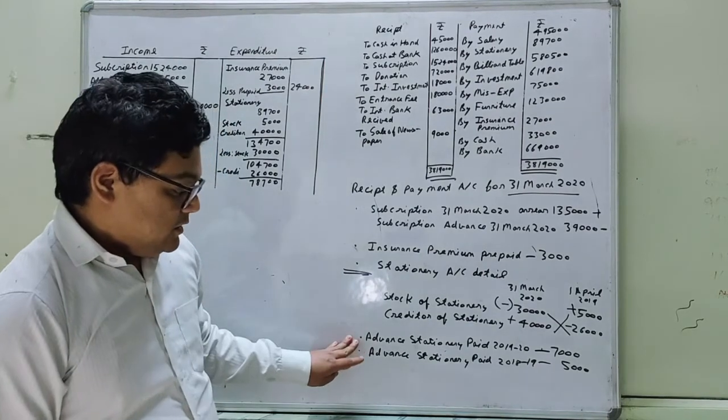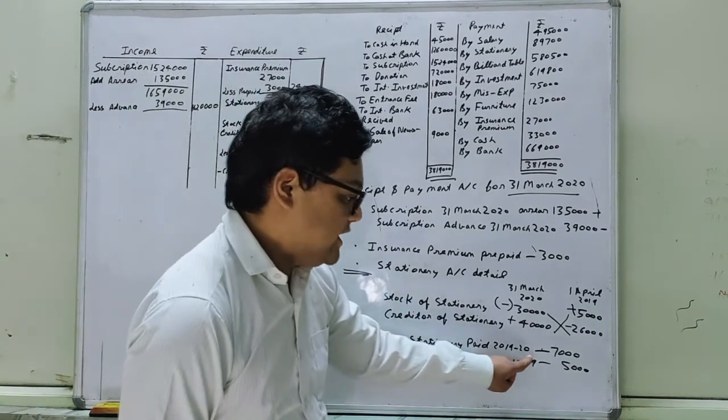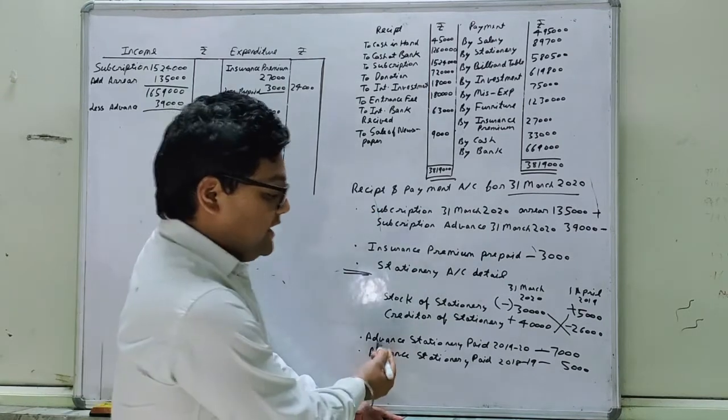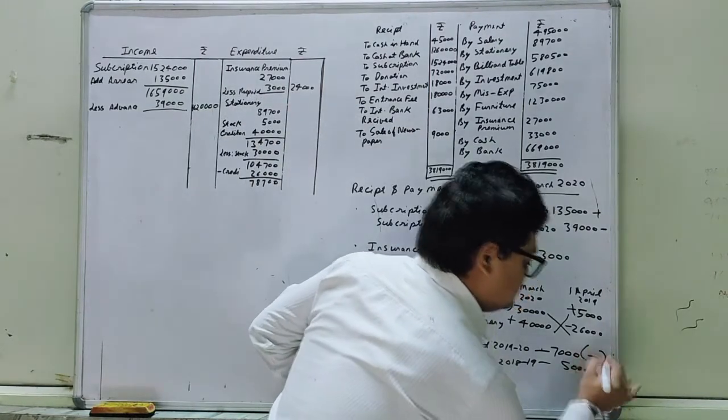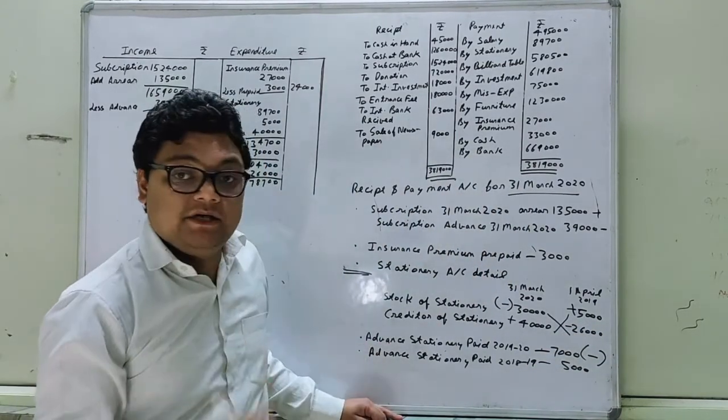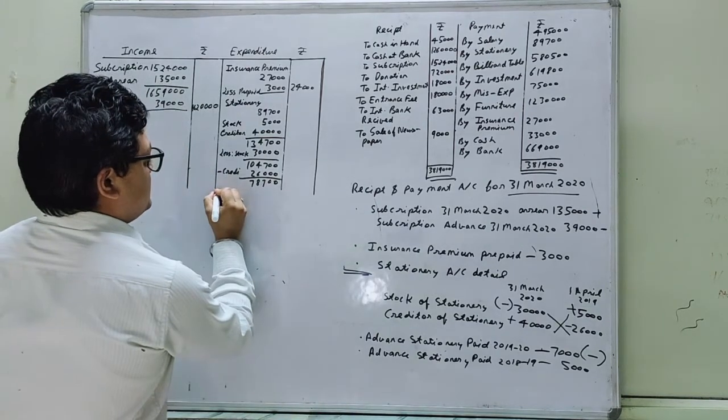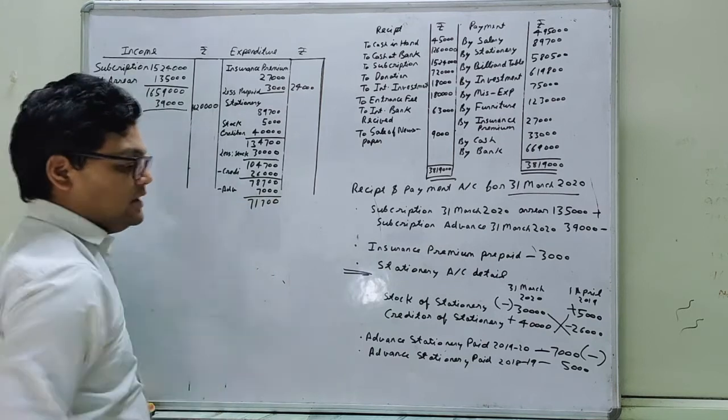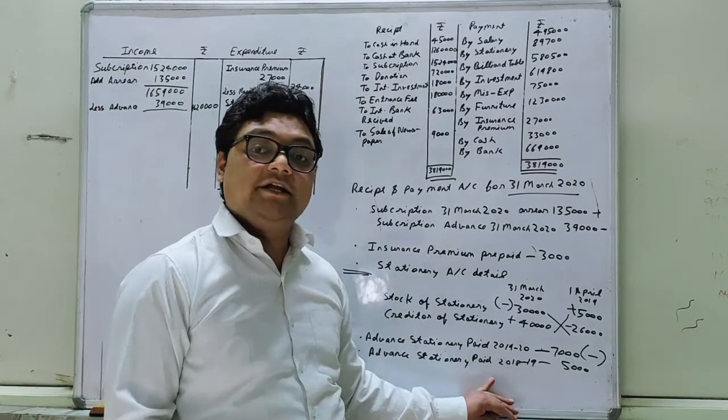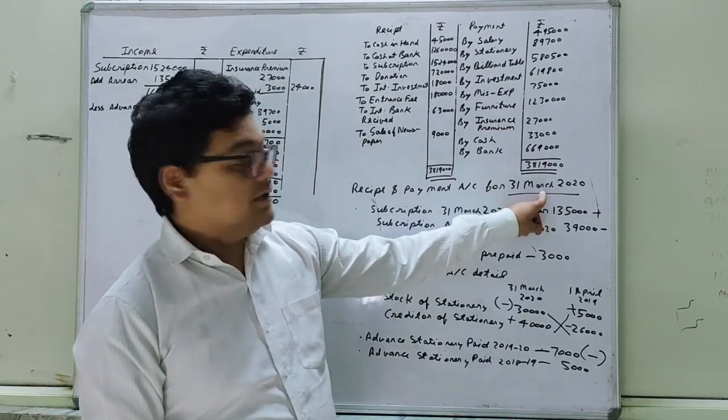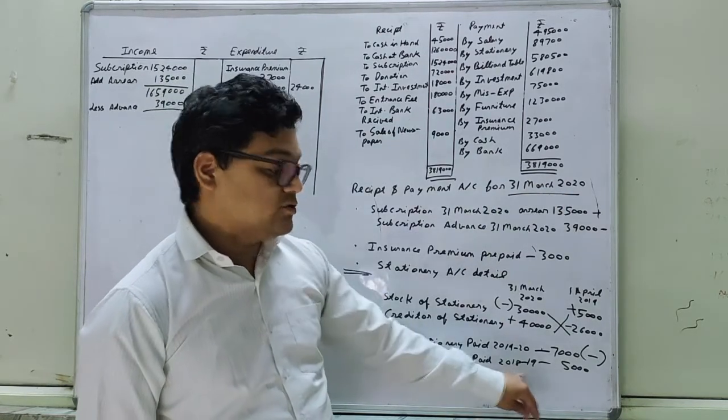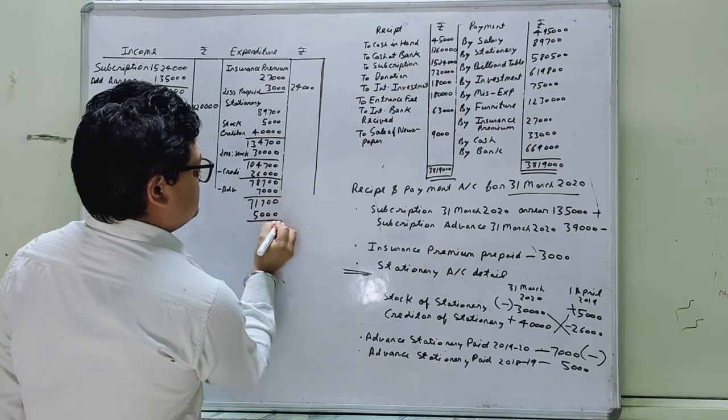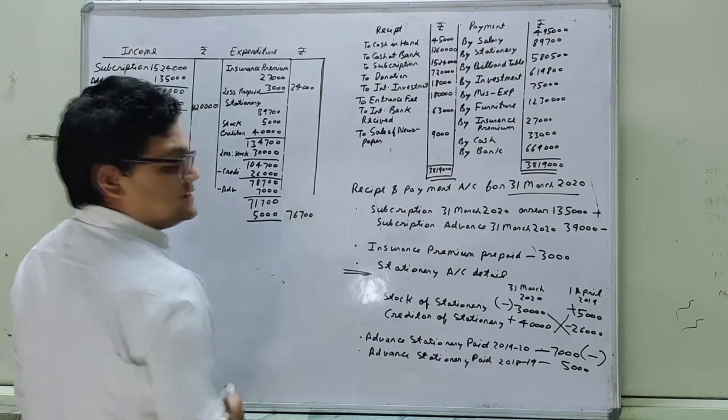78,700. Advanced stationary paid 2019 and 20, 7,000. Now here come, advanced stationary paid 2019-20, yarni this current year. Current year hamesha minus. And advanced for the previous year 2018-19, previous year. So this is advance which is added. It will become 76,700. Okay, so now the adjustment has been done.